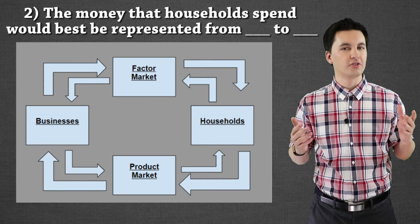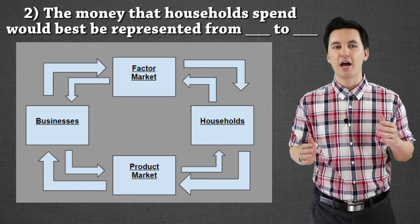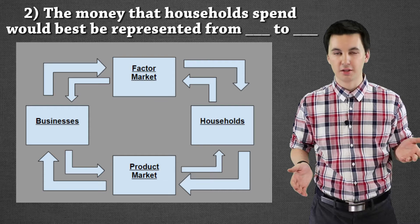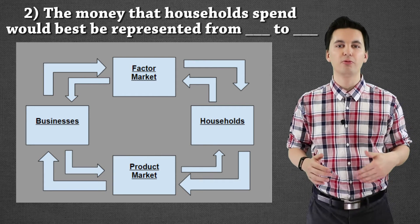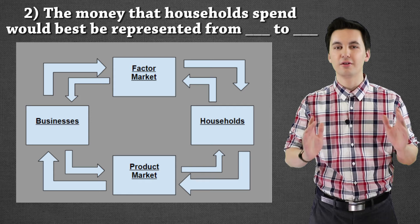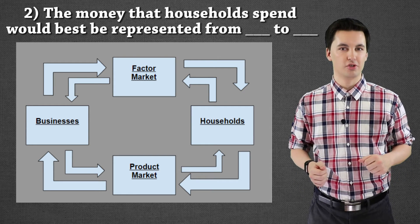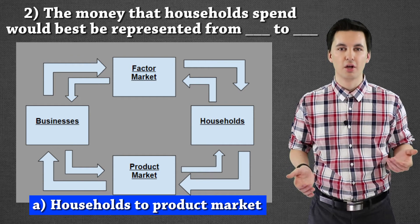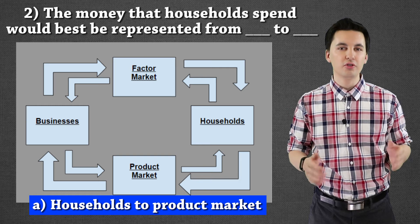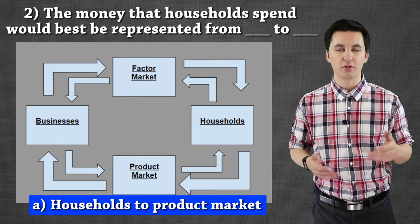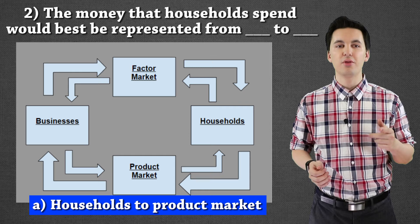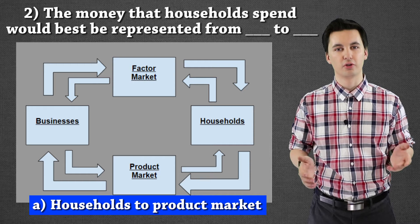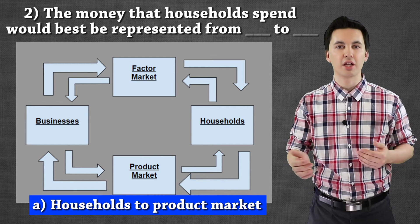For question number two, we have a very similar problem. We're looking at the money that households spend, represented by an arrow from blank to blank. If you said going from households to product market, you're correct. Remember, we have to have a transaction. If goods and services are coming from our product market going to our households like we figured out in the last problem, then we have to have money going from the households to our product market. Otherwise we wouldn't be able to purchase those goods and services.